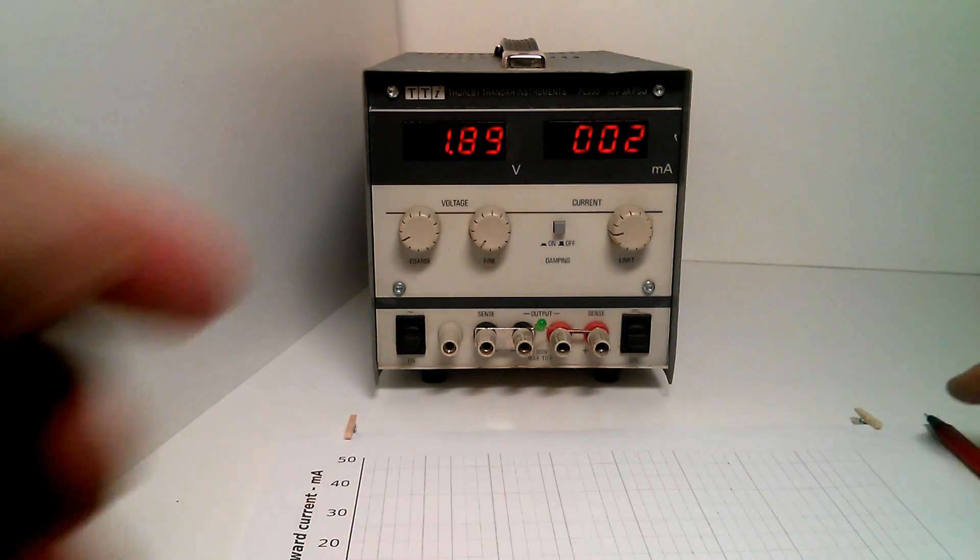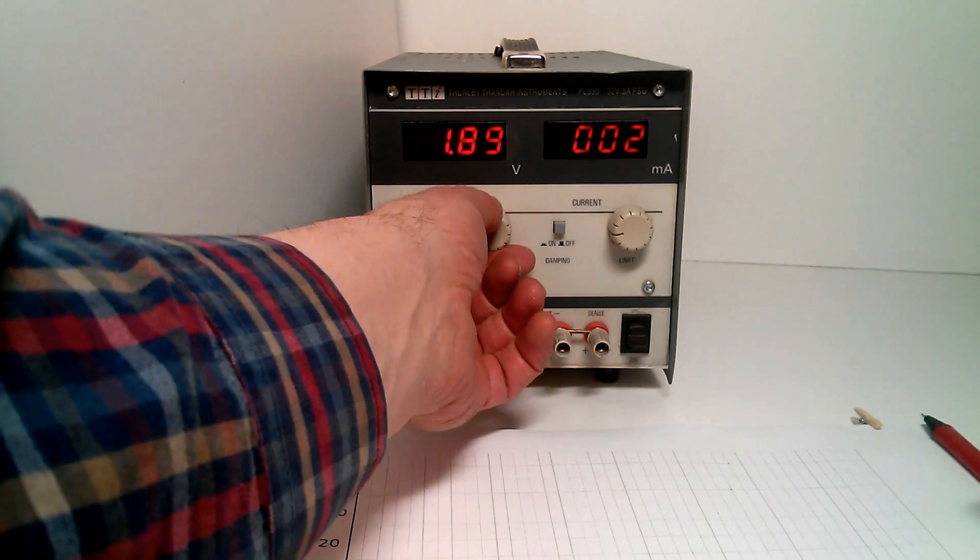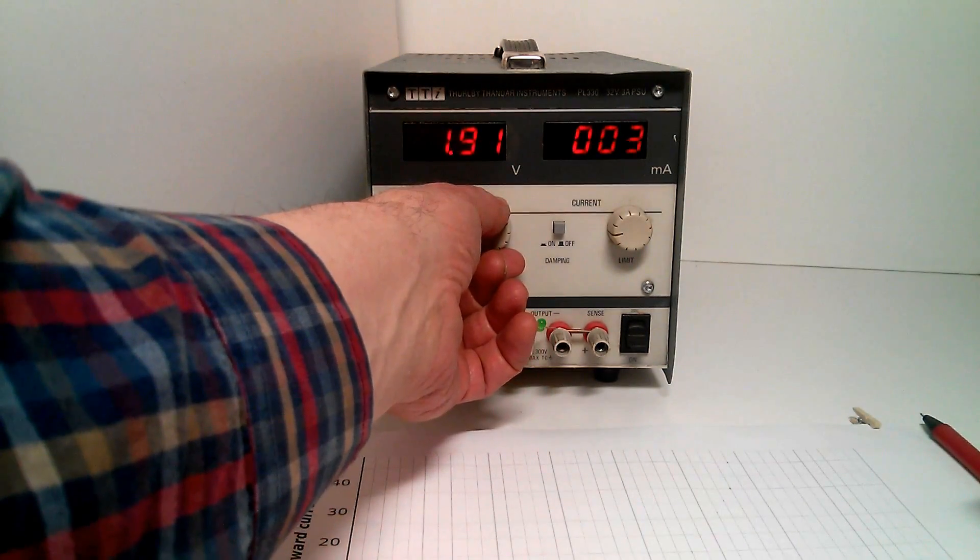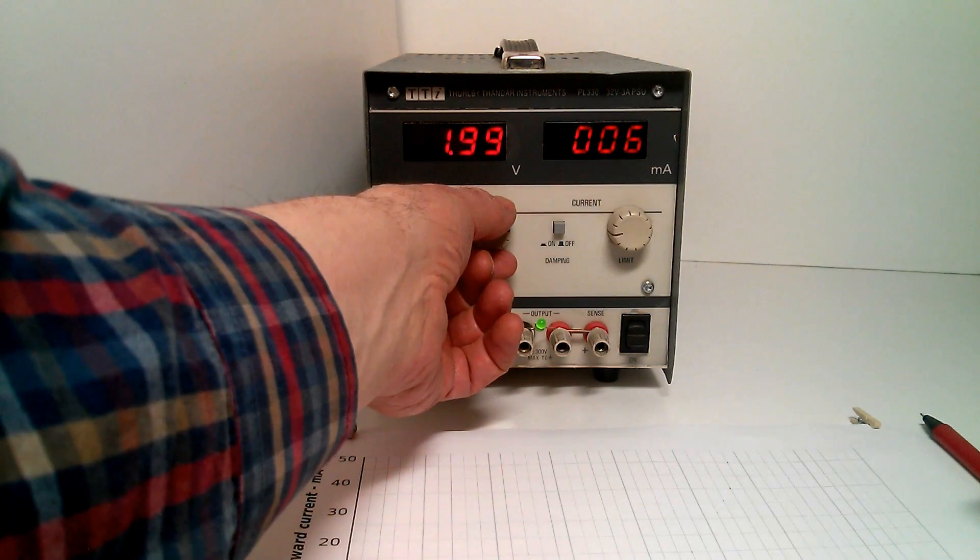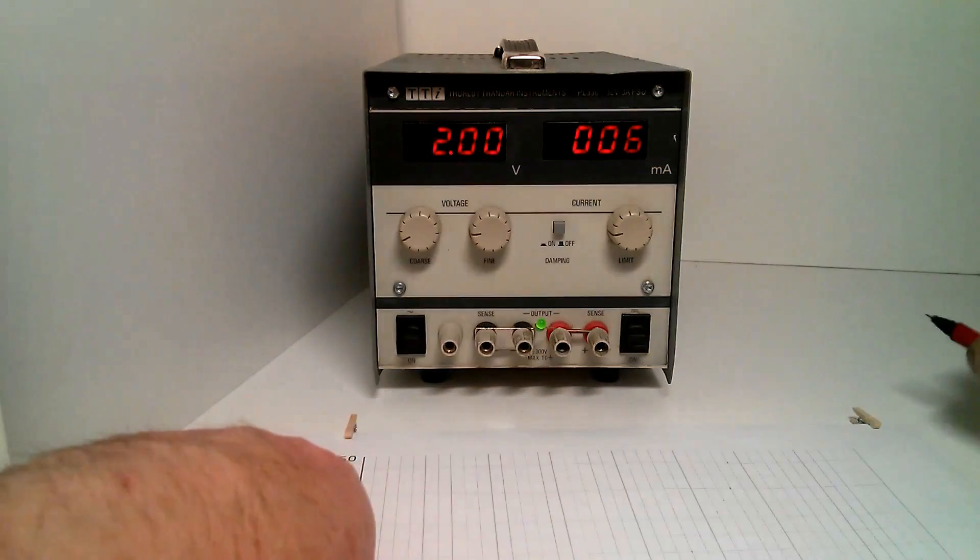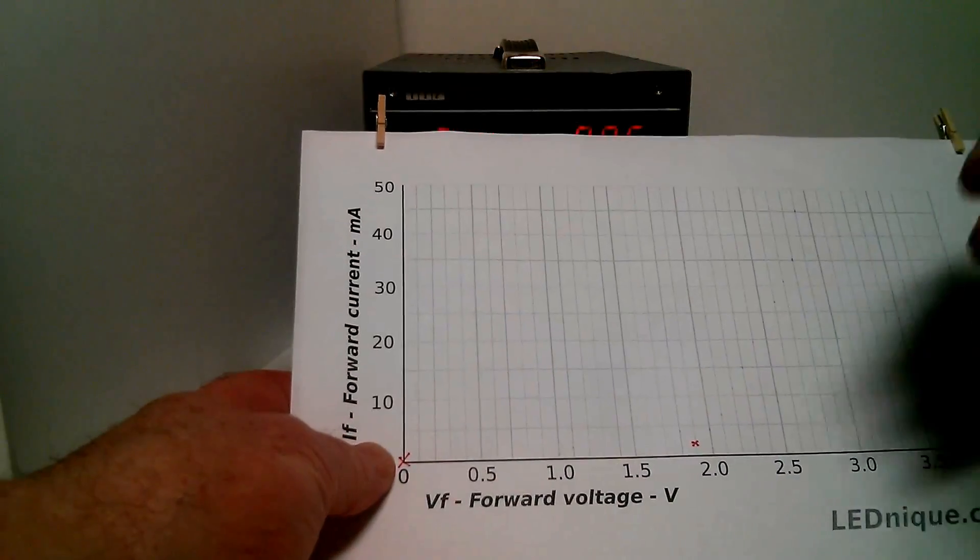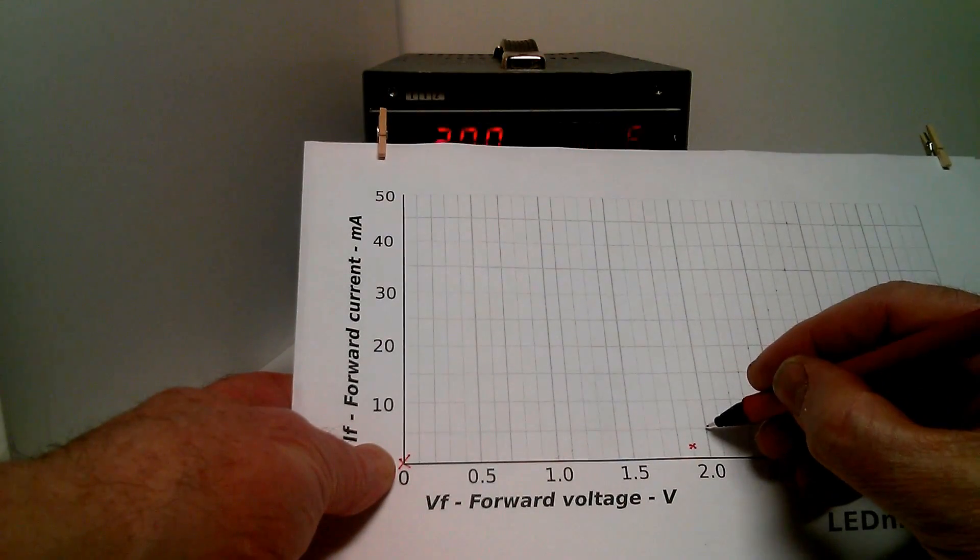So we'll increase to 2 volts. And we see we have 6 milliamps flowing, so we can go 2 volts, and 6 will be about there.